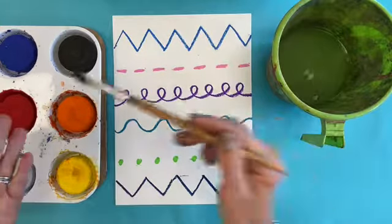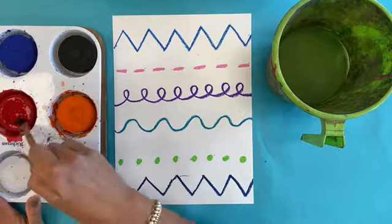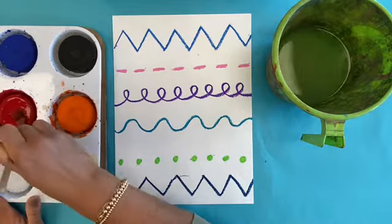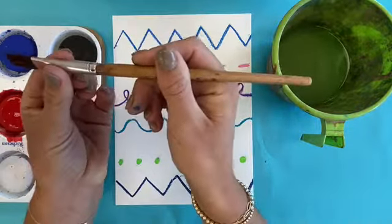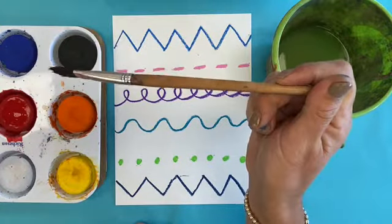So get that brush really wet. Choose a color. I'm gonna start with red. I'm actually gonna do the order of the rainbow, so the first color of the rainbow is red. When you paint, you want to make sure that you're not holding your brush all the way up top, because you want to have good control of your brush. So make sure you're holding your brush in the middle, close to the bottom.